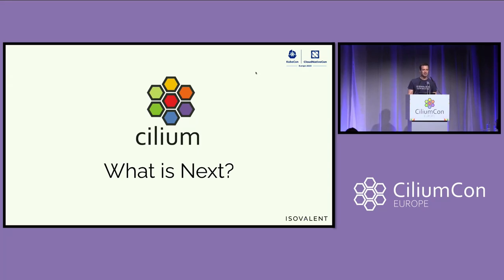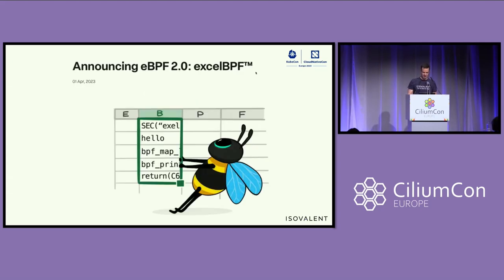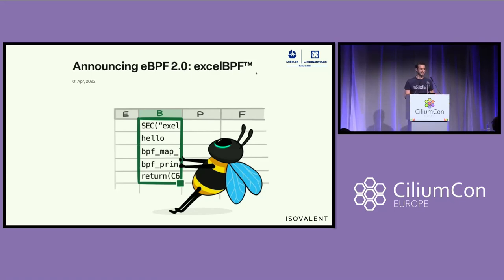What is next? We saw the story up to this point, and Cilium has grown quite a bit. What is the next step? Well, there was eBPF 2.0 with eBPF for Excel — but let's check the date: that was obviously our April Fools joke this year.